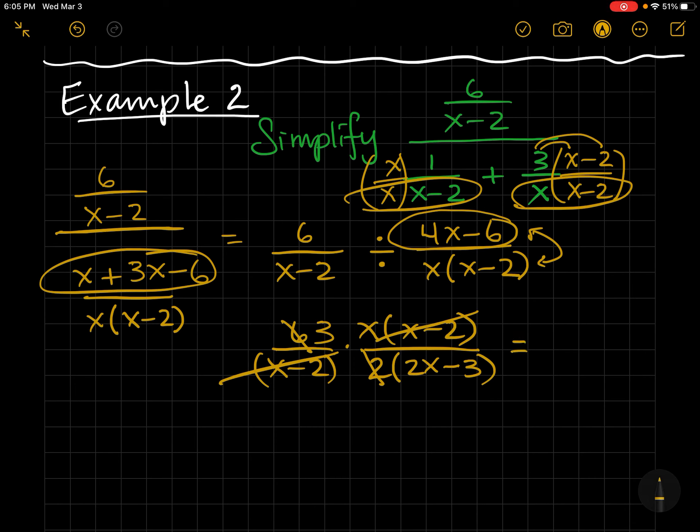Let's see. Is there anything else? I don't think so. I think my final answer is 3x over 2x minus 3.